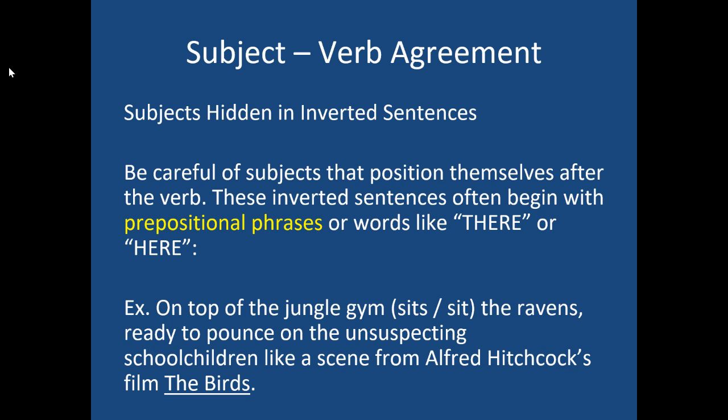Be careful of prepositional phrases, which can also create inverted sentences. For example: 'On top of the jungle gym sits or sit the ravens, ready to pounce on the unsuspecting schoolchildren, like a scene from Alfred Hitchcock's The Birds.' Even though 'gym' is sitting right in front of the verb, it's in the prepositional phrase 'on top of the jungle gym'. The actual subject is 'ravens', sitting far away. So I'd use 'sit' — because I'm saying the ravens sit on top of the jungle gym. Ravens is what controls the verb.